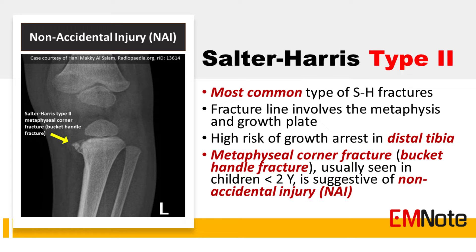Salter-Harris type 2 fracture is the most common of the Salter-Harris fractures. The fracture line extends through the metaphysis and the growth plate without involvement of the epiphysis. The resulting metaphysial fragment is referred to as a Thurston-Holland fragment. Notably, the distal tibia is at particularly high risk of growth arrest, correlating with millimeters of initial displacement. Metaphysial corner fracture, also known as bucket-handle fracture, is a kind of Salter-Harris type 2 fracture, usually seen in children less than 2 years old and is suggestive of non-accidental injury, that is, child abuse.